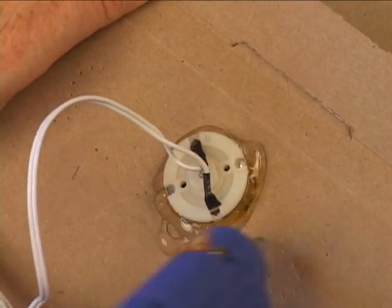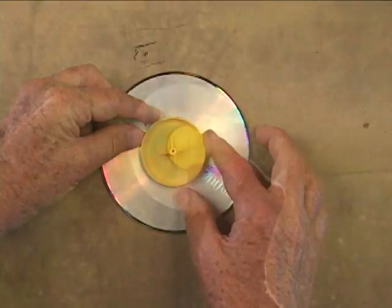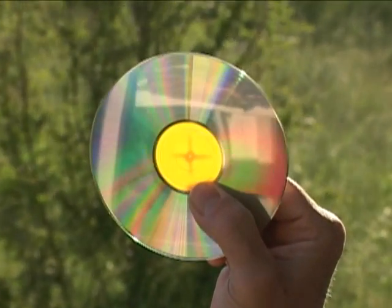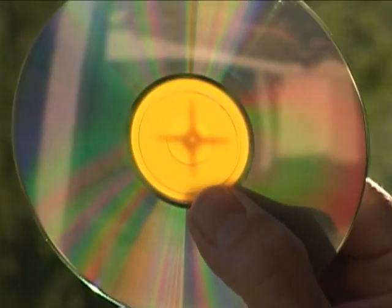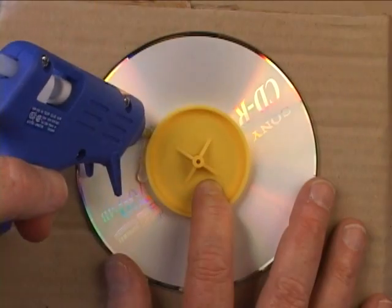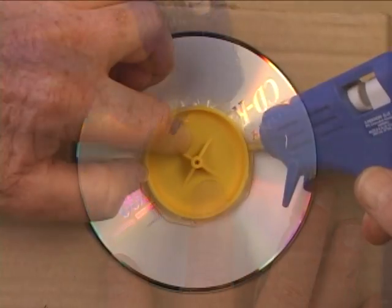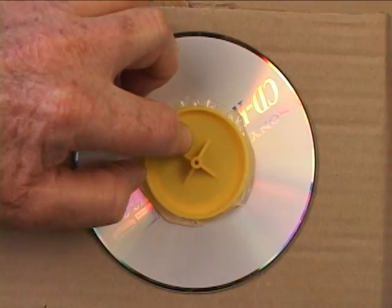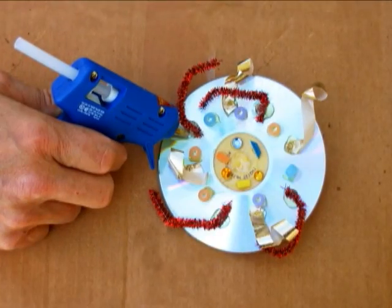Next, align the yellow wheel with the center of the CD. It helps to hold them up to the light and center the cross-shaped shadow on the back of the wheel with the hole in the CD. Use hot glue to attach the wheel to the CD. Then decorate the whirligig by hot gluing various art supplies to the CD.